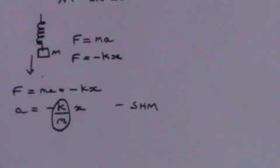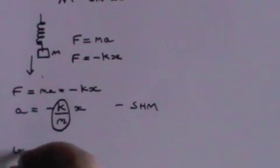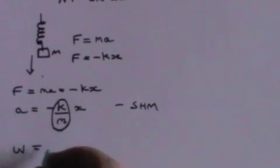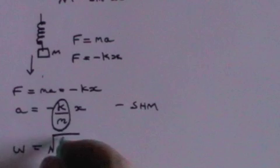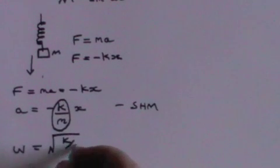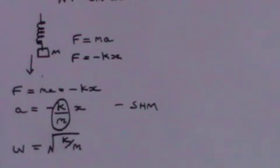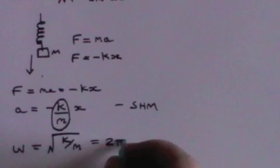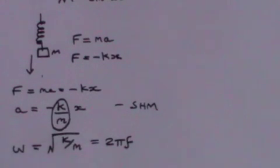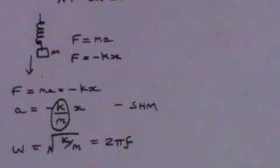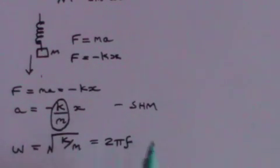Omega squared is k over m. Therefore, omega is the square root of k over m, and that equals 2 pi f. That enables you to determine the frequency of the oscillations. If the mass increases, then the frequency will decrease.